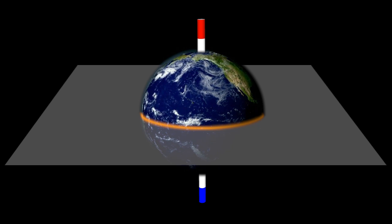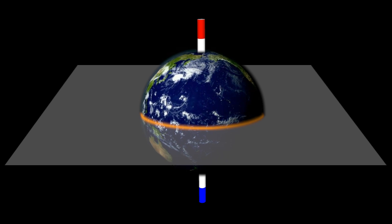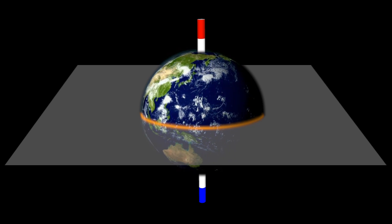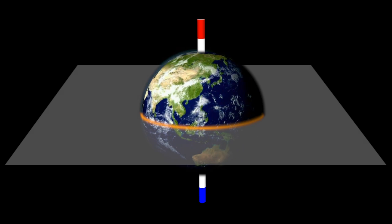In addition to their apparent daily motion around the Earth, the Sun, Moon, and planets of the solar system have their own motion with respect to the sphere.